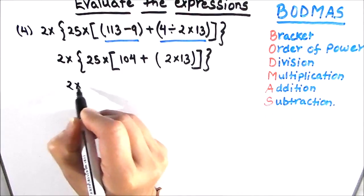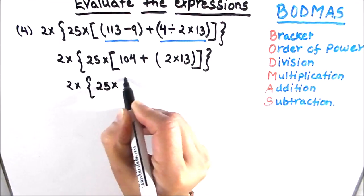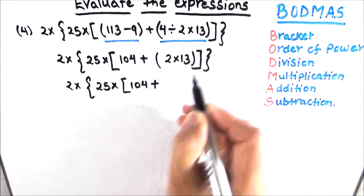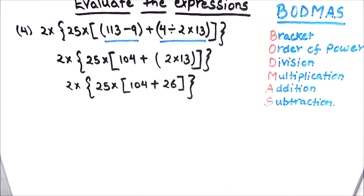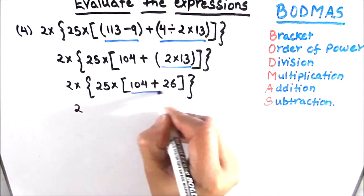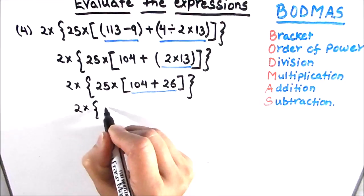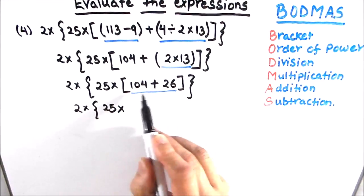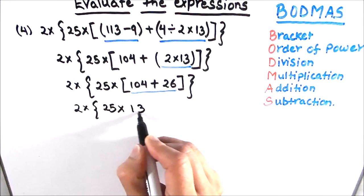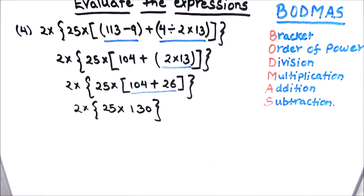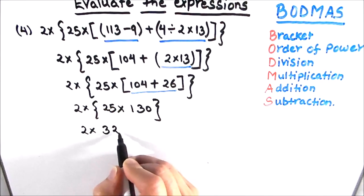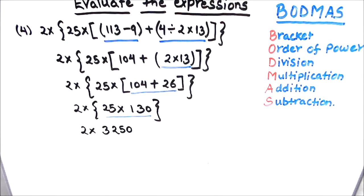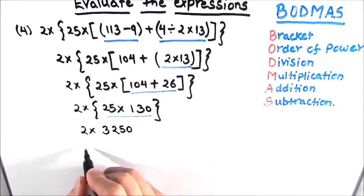So we have 2 times 25 times big bracket of 104 plus 26. The small bracket is solved: 104 plus 26 is 130. Now we solve the big bracket: 25 times 130 is 3250. In the last step we multiply: 2 times 3250 gives us 6500. So 6500 is our final answer.